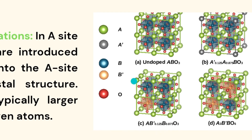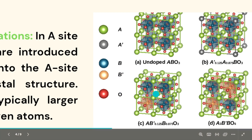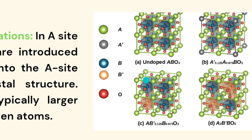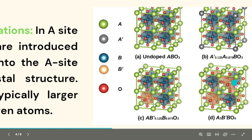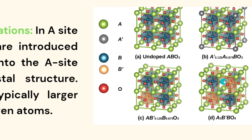Moving to B-site doping: initially, at the center of each cube — there are four cubes — each has a B atom at its center. We substitute one of them, which becomes B-prime, so the substitution occurs in only one cube at first. As the process continues, the substitution increases to a specific proportion, reaching approximately 50–52% dopant with the remaining undoped B-site and oxygen in place.